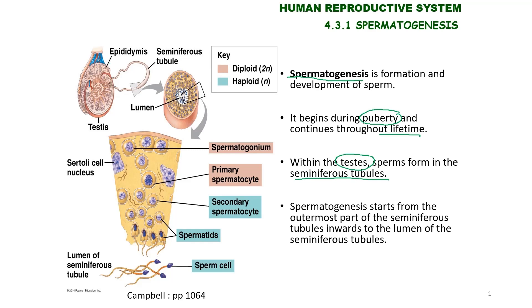You can see here this is one testis. Inside the testis, there is a lobule. Inside the lobule, you can see one to four seminiferous tubules coiling up. This is the cross-section of one seminiferous tubule. Spermatogenesis starts from the outermost part of the seminiferous tubule towards its lumen.